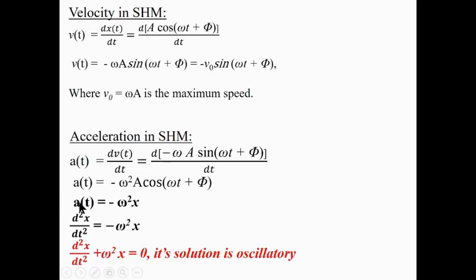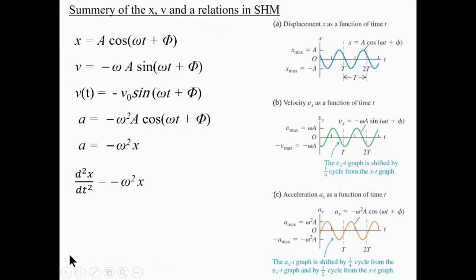The equation a = -ω²x is the hallmark equation of simple harmonic motion. It is a second-order differential equation, since acceleration is the second derivative of x with respect to time. We know from standard differential equation solutions that this type of equation has an oscillatory solution, mathematically proving the motion is oscillatory. Plotting position, velocity, and acceleration as functions of time shows their sinusoidal relationships.